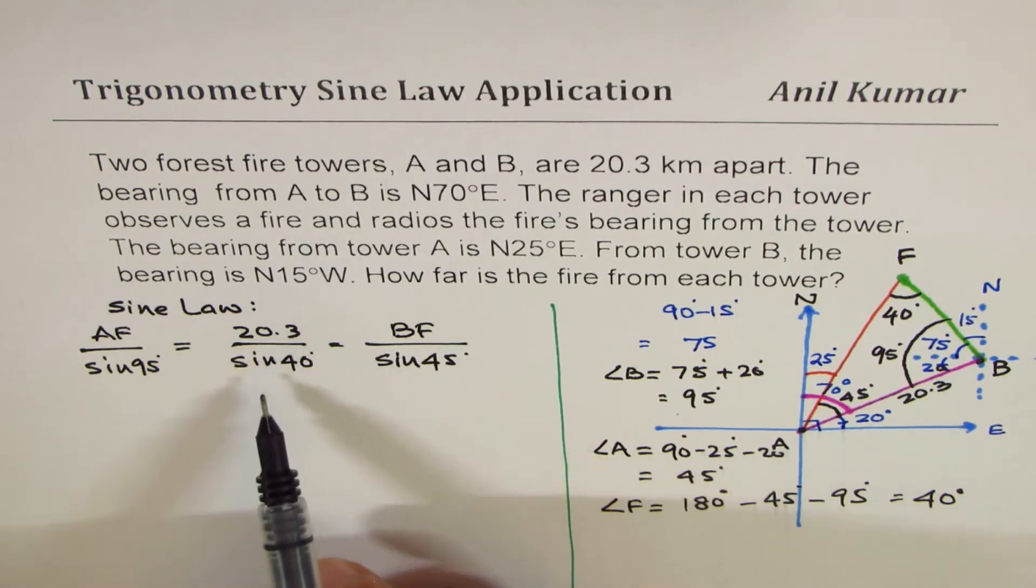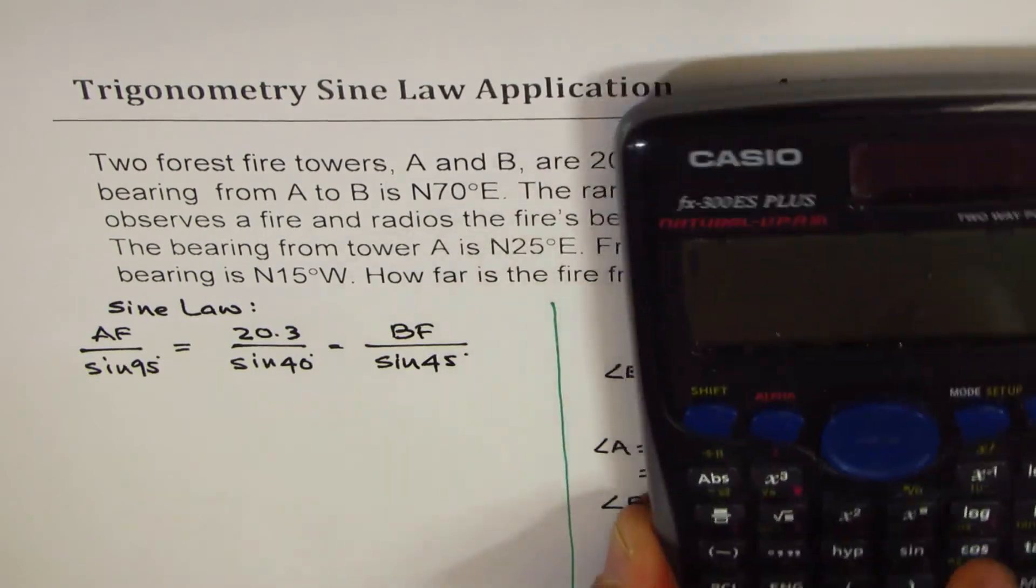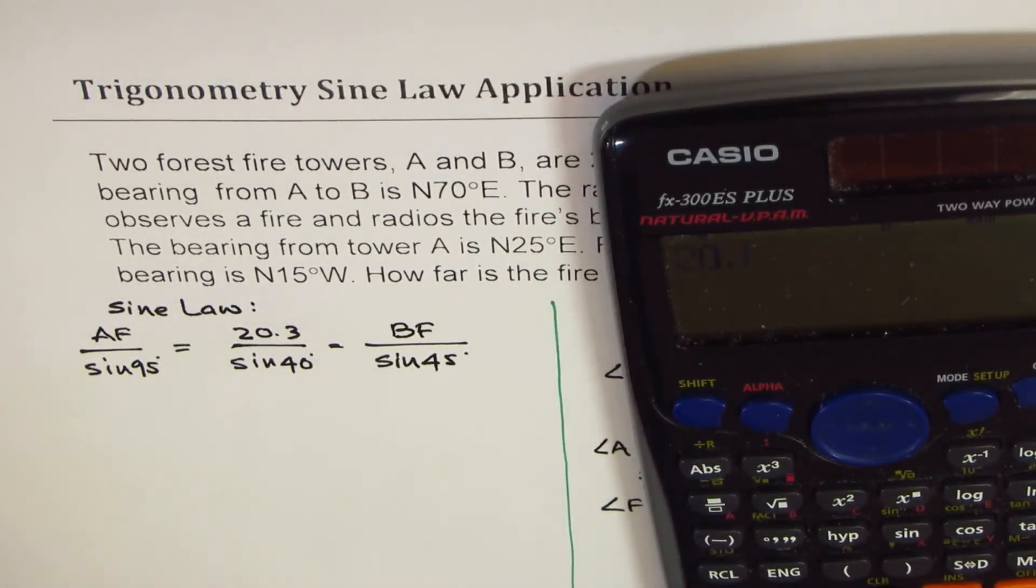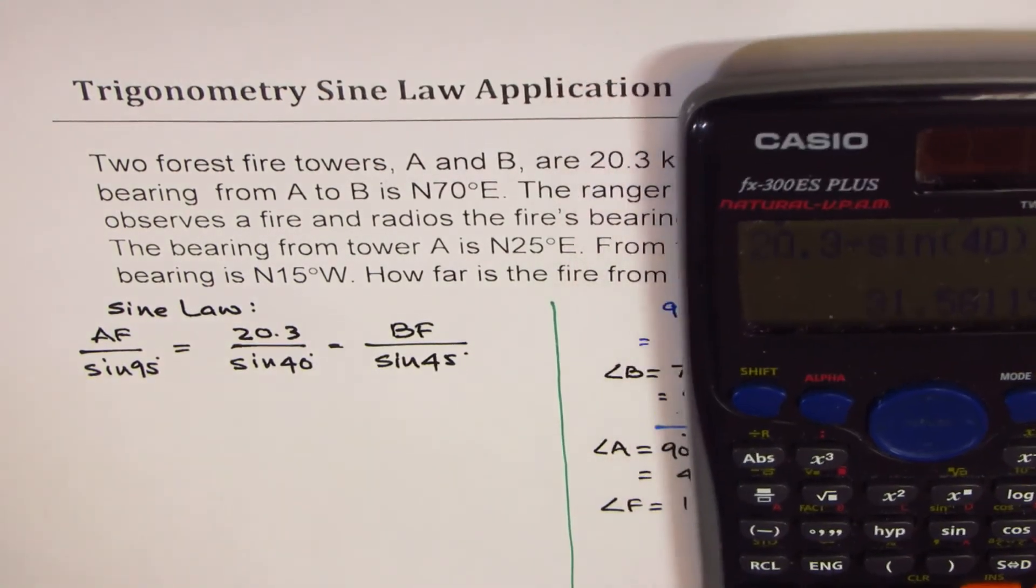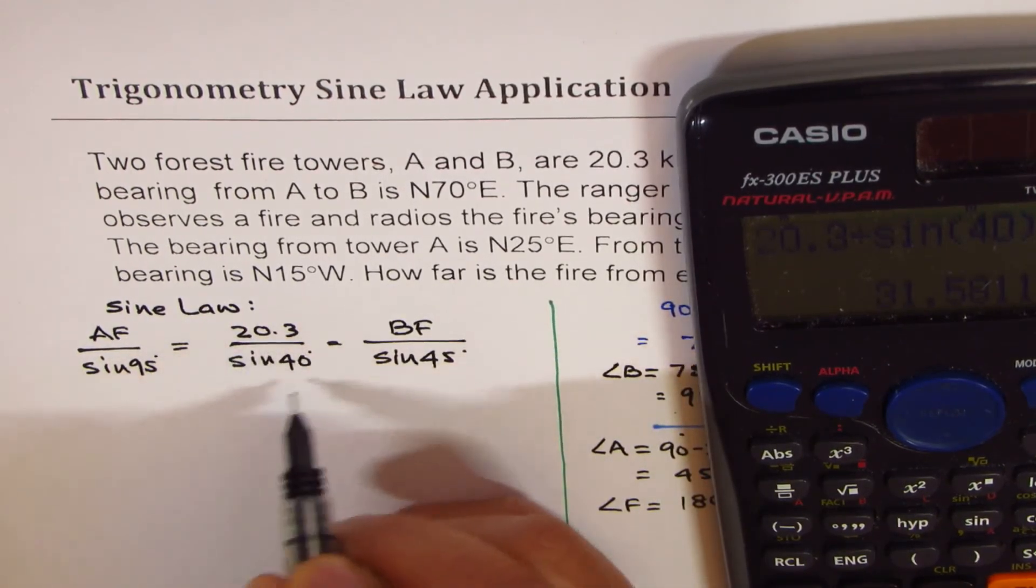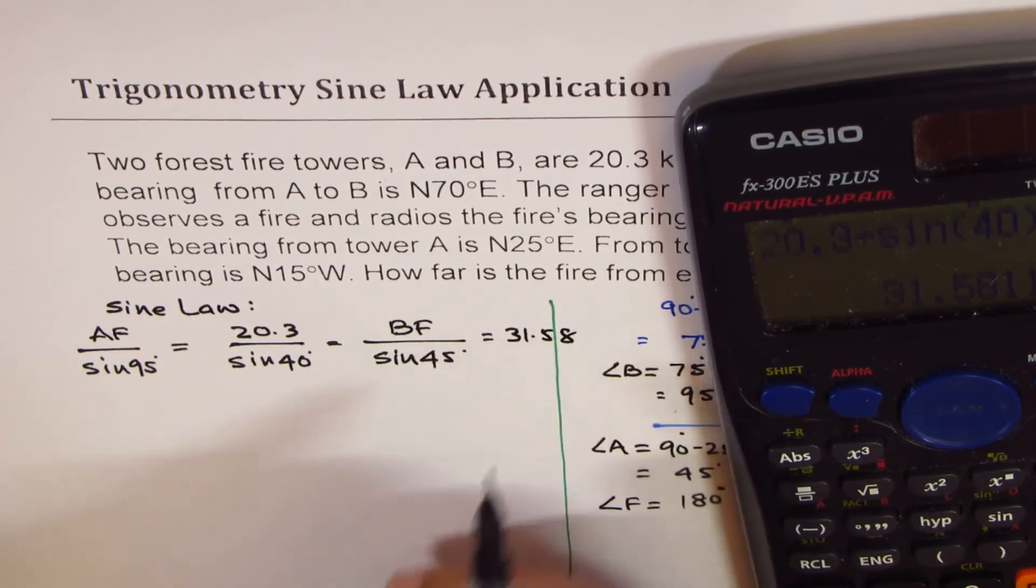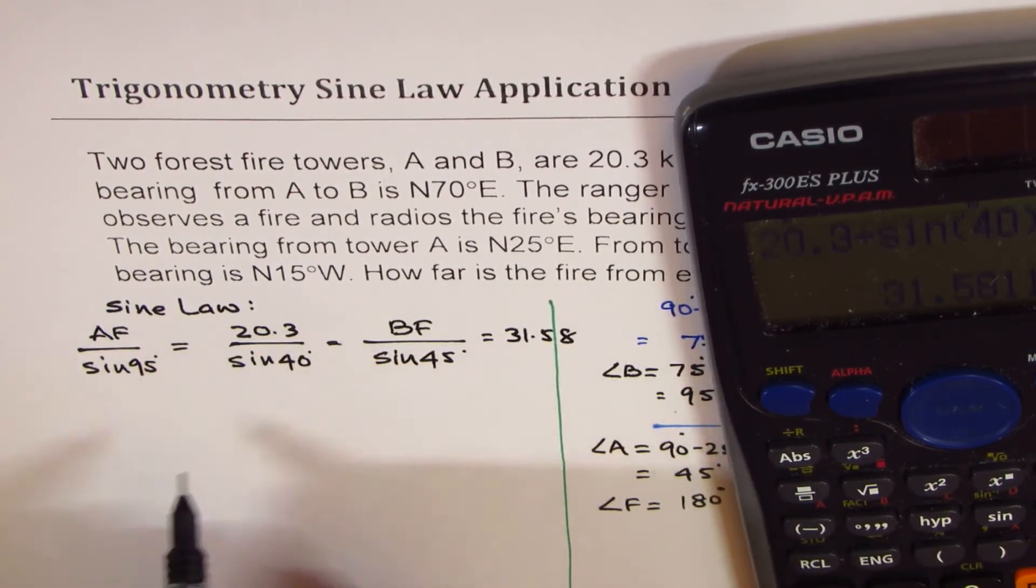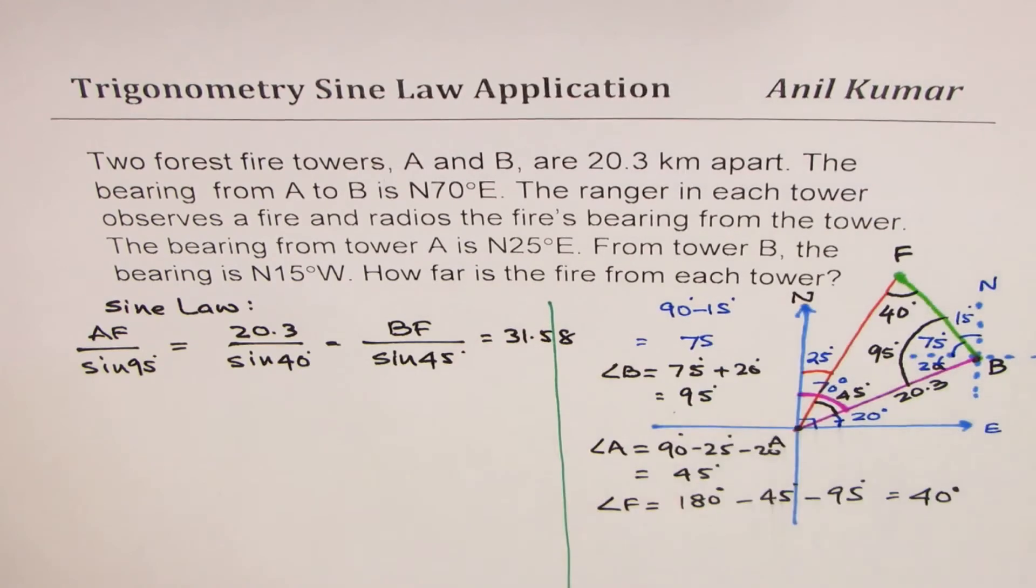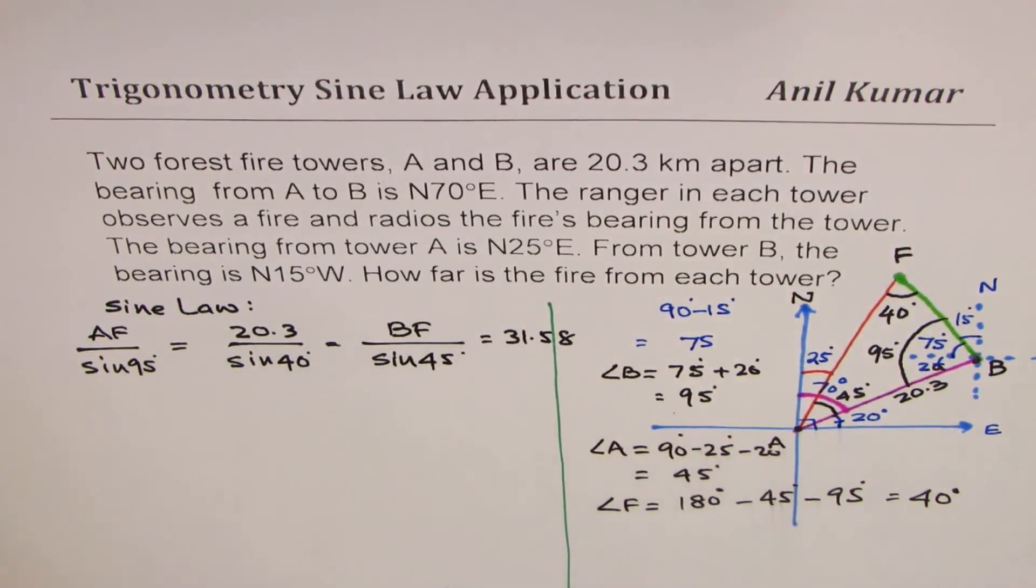So we get our sine law. Now, 20.3 over sine 40 is known to us. Let's calculate this value. 20.3 divided by sine of 40 degrees is equal to 31.58. So this ratio is 31.58. So this ratio.